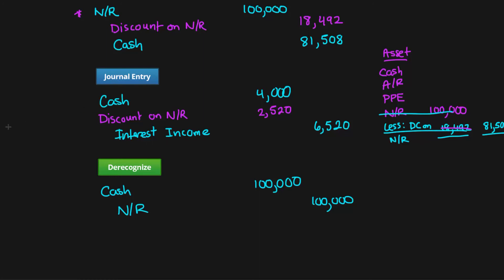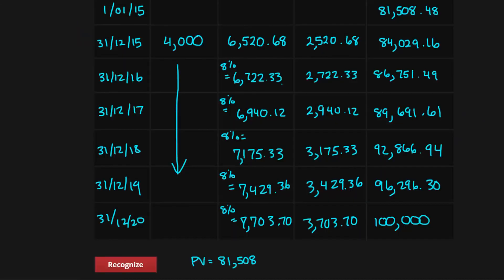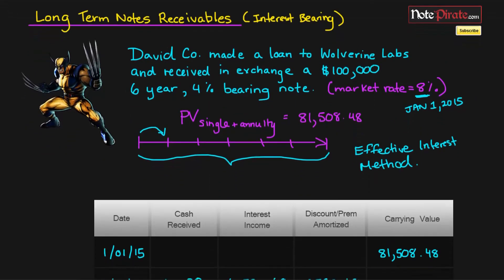Why do we want to use this method? It's a little bit more transparent in that if some external party was looking at our books, it might be easier for them to see that we're amortizing a discount instead of using the note receivable account directly. This is just a little bit more clear. I'll see you guys in the next tutorial when we cover non-interest bearing notes receivables.